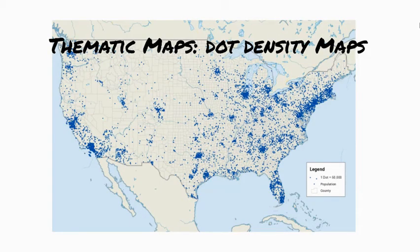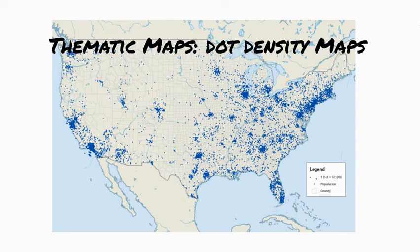Dot density maps use density of dots to show statistical or demographic data. In this map, the more dense the area of dots, the higher the population. When we ask what is happening where, we can say that populations are higher on the coasts and in major cities of the mid-Atlantic, west coast, midwest, and southern US. To find out why there, we would need to ask more questions. What are some questions we could ask to determine why the population is higher in these areas?